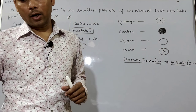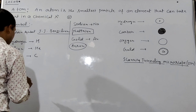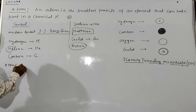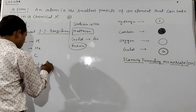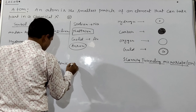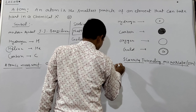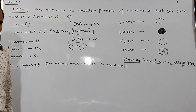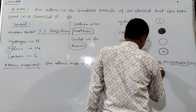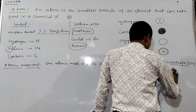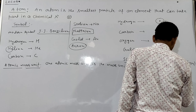What is atomic mass unit? One atomic mass unit (AMU) is the mass unit equal to one-twelfth the mass of one atom of carbon-12 (C-12).